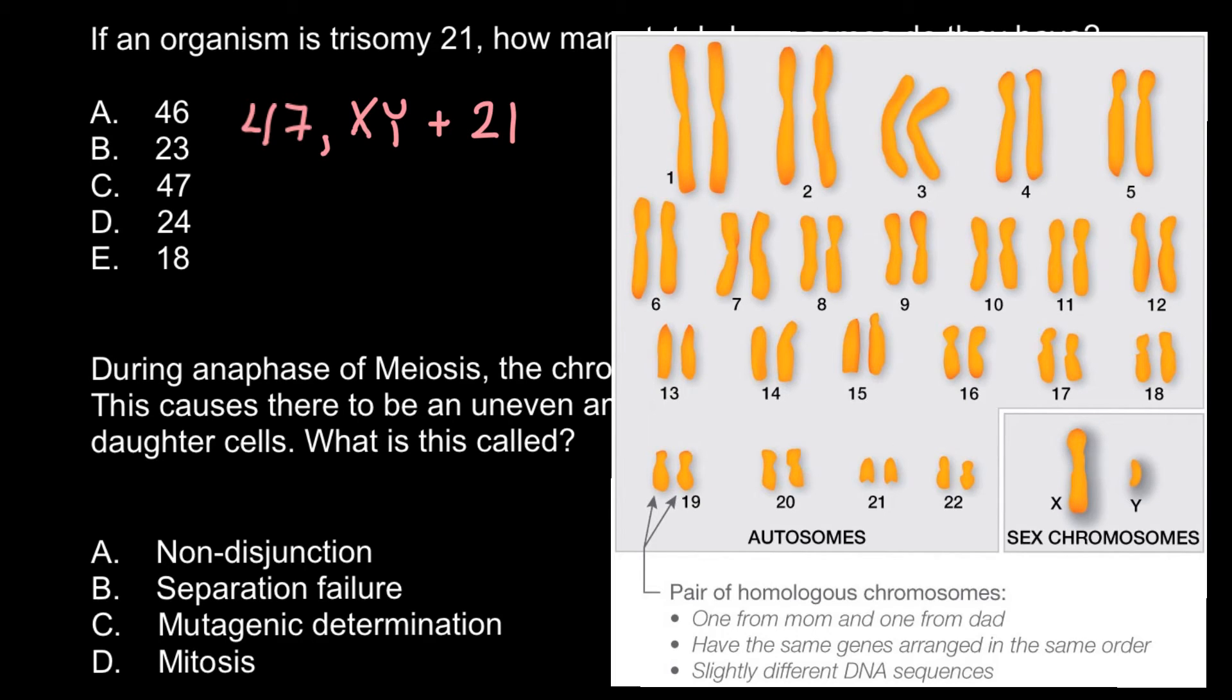And the notation for a female would be 47, X, X, plus 21. So as you see, the correct answer is answer C.